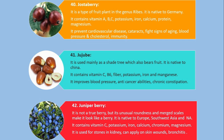Number 41. Jujube. It is used mainly as a shade tree which also bears fruit. It is native to China. It contains vitamin C, B6, fiber, potassium, iron and manganese. It improves blood pressure, has anti-cancer abilities, and treats chronic constipation.